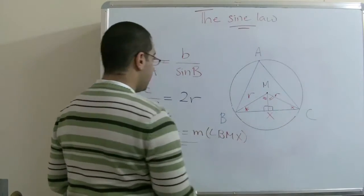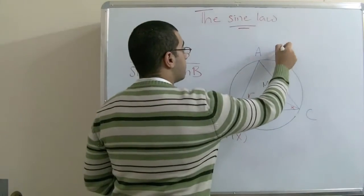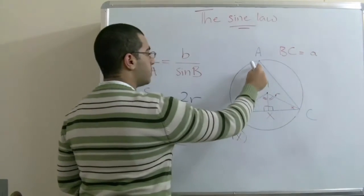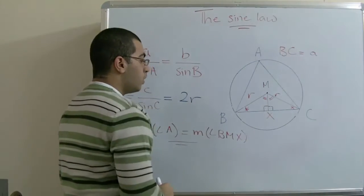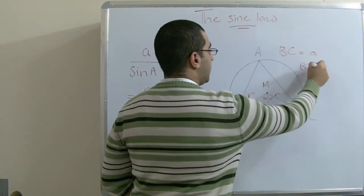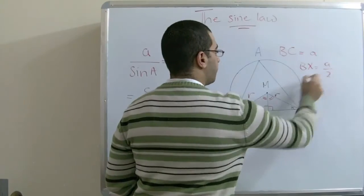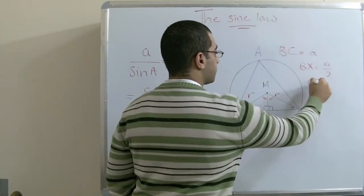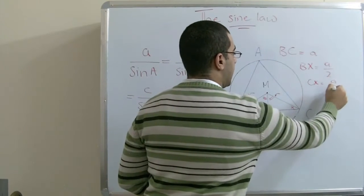this side BC equals a because it's opposite to angle A. We can get that BX equals a over 2, and also CX equals a over 2.